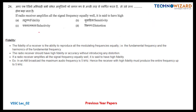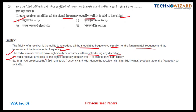Question number 24: if a radio receiver amplifies all signal frequencies equally well, it is said to have high fidelity. The fidelity of a receiver is the ability to reproduce all the modulating frequencies equally — the fundamental frequency and its harmonics. The radio receiver should have high fidelity or accuracy without introducing any distortion. For example, in an AM broadcast the maximum audio frequency is 5 kHz, so a high fidelity receiver must produce the entire frequency up to 5 kHz.